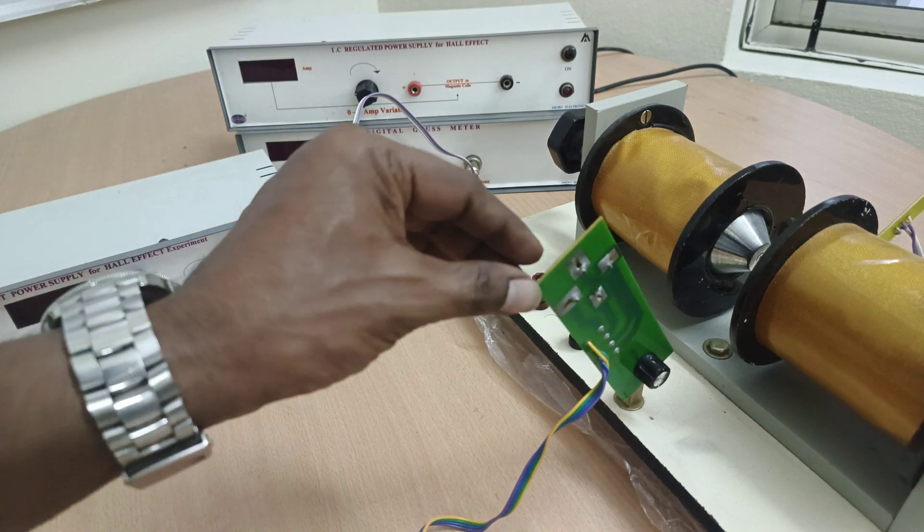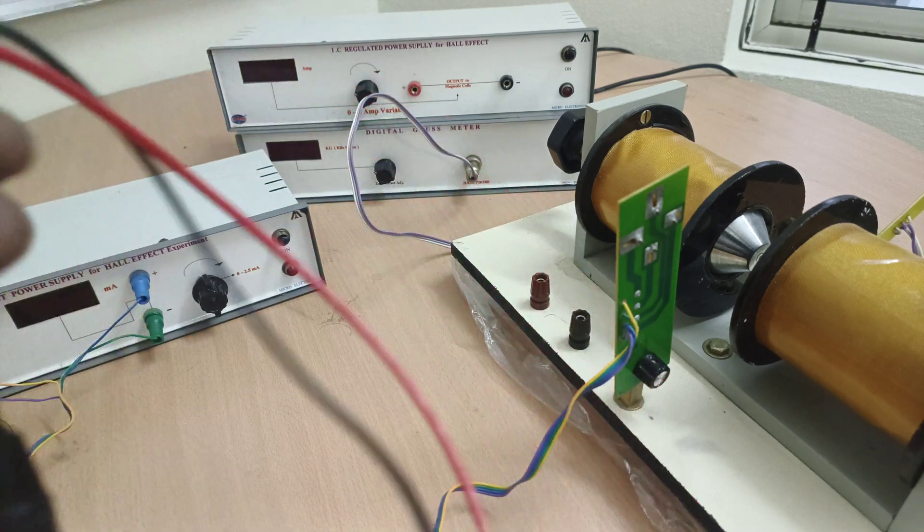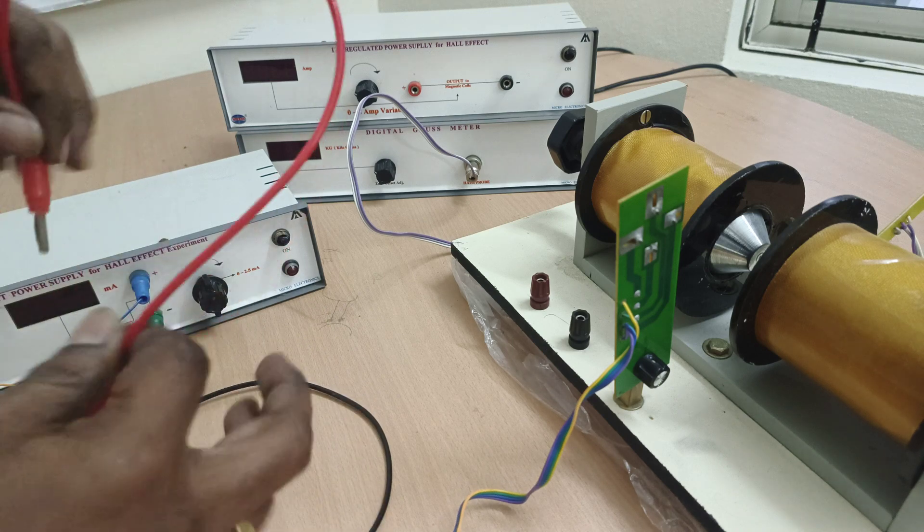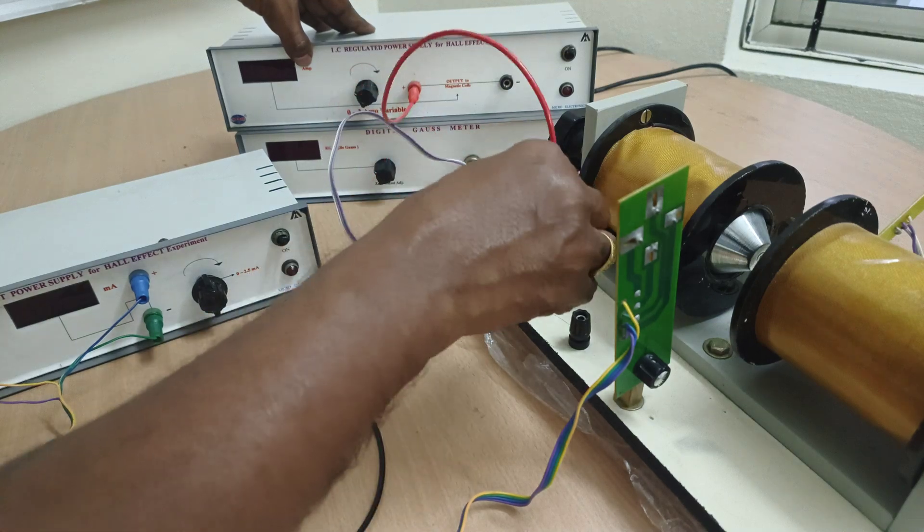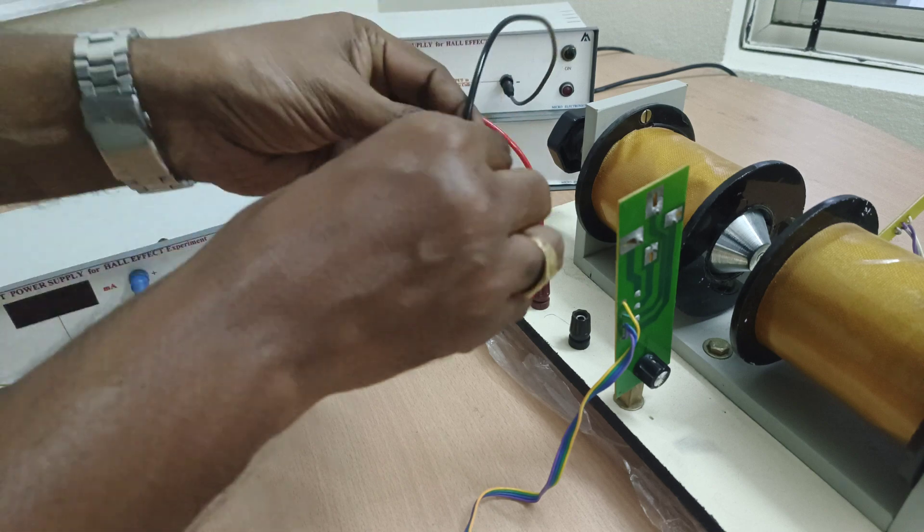Yellow one is connected to yellow, and by using these two patch cords we have to connect electromagnet from IC regulated power supply to electromagnet like this.